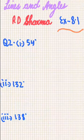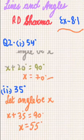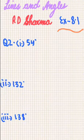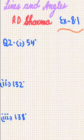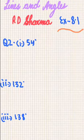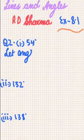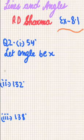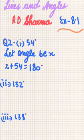Now let's move to question 2, which states: write the supplement of each of the following angles. First we need to know what supplementary angles are. Two angles whose sum is 180 degrees are called supplementary angles. For the first part, 54 degrees — let the angle be x. So x plus 54 equals 180 degrees, giving x equal to 126 degrees.